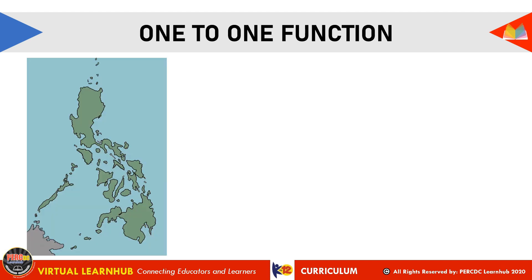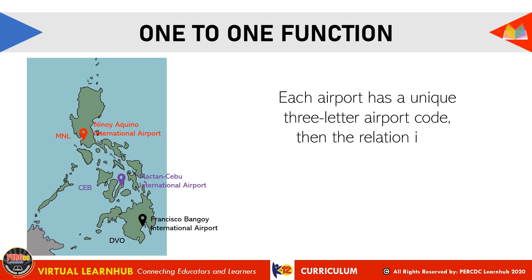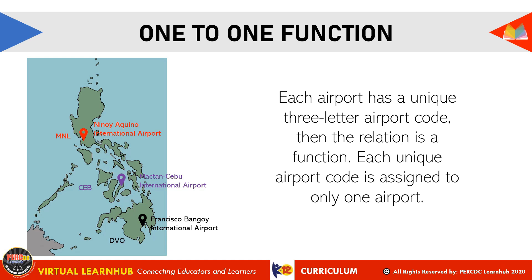Next, the three major airports in the Philippines are: the Ninoy Aquino International Airport, the Mactan Cebu International Airport, and the Francisco Bangoy International Airport. Each airport is assigned a unique three-letter airport code by the International Air Transport Association. The Ninoy Aquino International Airport is MNL, Mactan Cebu is CEB, and Francisco Bangoy in Davao is DVO. Since each unique airport code is assigned to only one airport, we can consider this to be a one-to-one function as well.